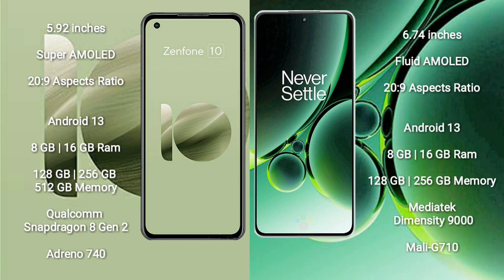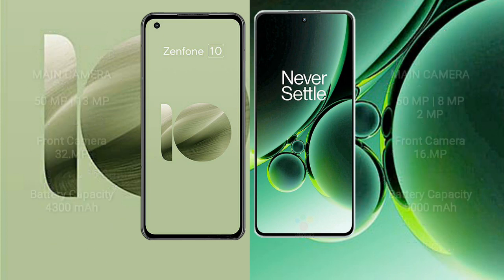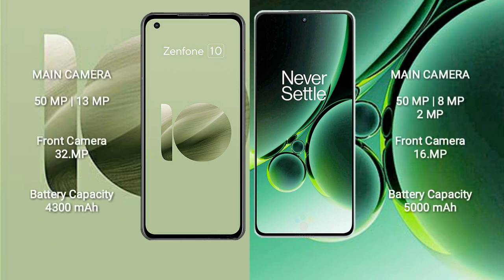OnePlus Nord 3 runs on Android 13. It comes with 8GB or 16GB RAM and 128GB or 256GB internal storage. It features a MediaTek Dimensity 9000 processor and GPU Mali-G710. Asus Zenfone 10 has a dual rear camera setup: 50MP plus 13MP, and a 32MP front camera.